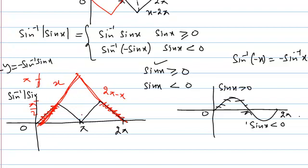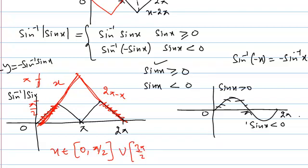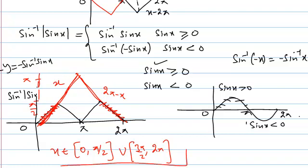We include the part where the two graphs are equal. The answer is x ∈ [0, π/2] ∪ [3π/2, 2π], because in these parts the two graphs are equal. In the middle interval, cos⁻¹(cos x) is above sin⁻¹|sin x| — the black graph is nowhere above the red graph — so that interval is excluded. This gives us the final solution.